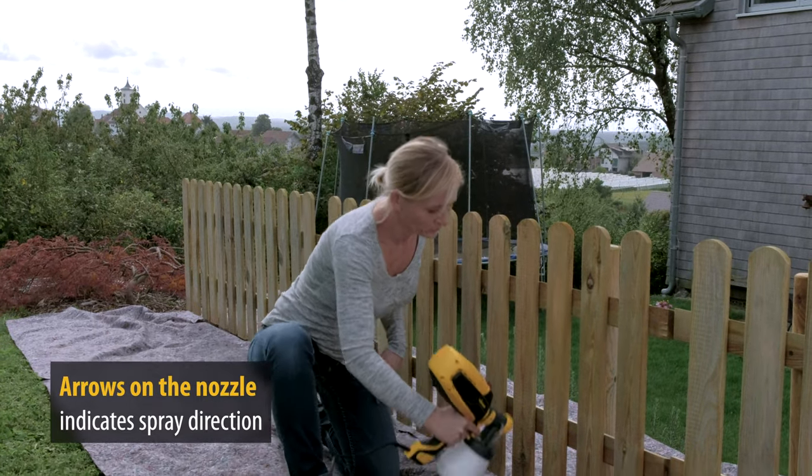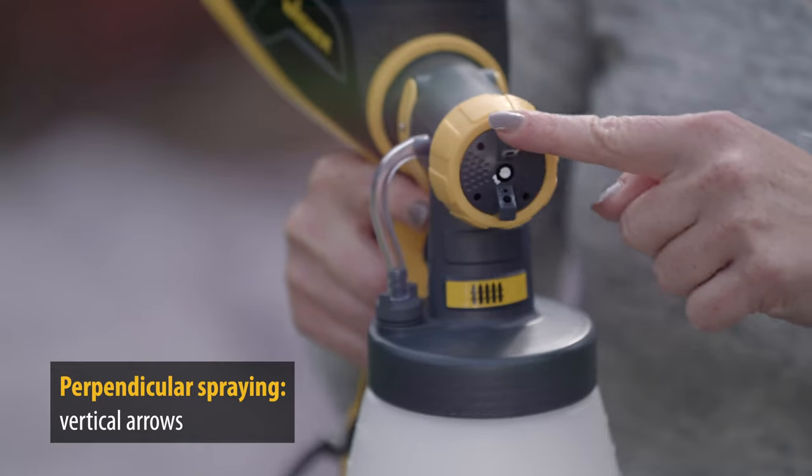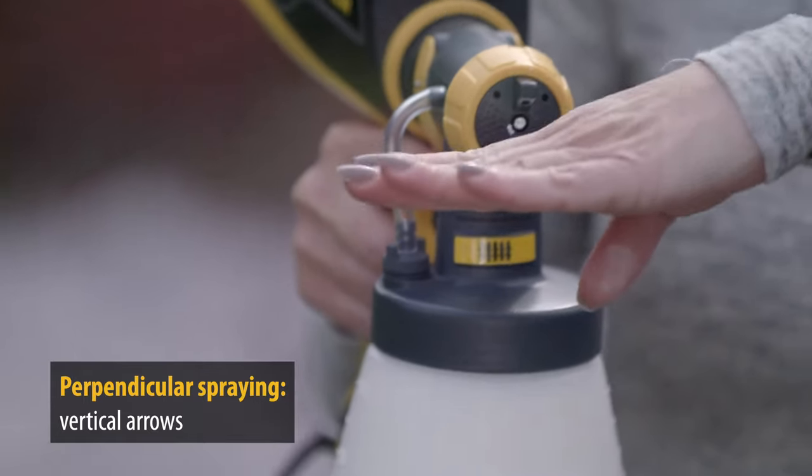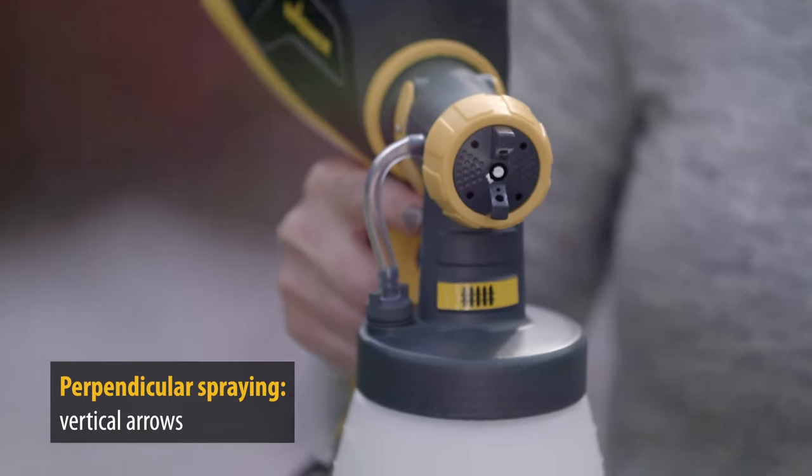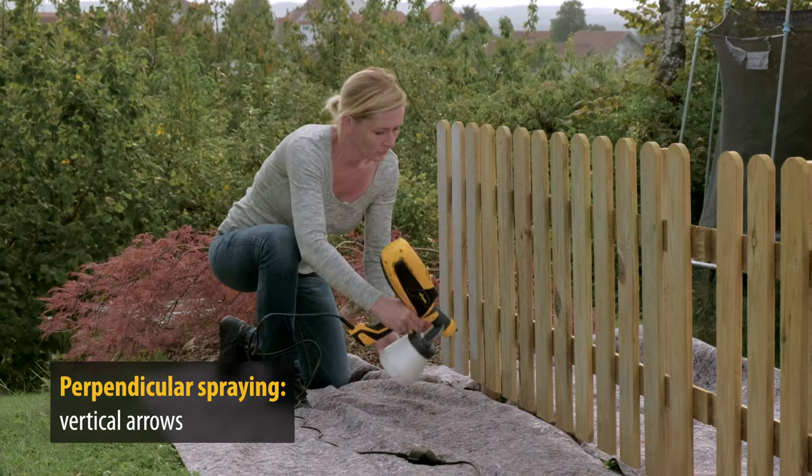The spray attachment has a three-way adjustable paint jet. The arrows always indicate the spray direction. For vertical slats, the nozzle is adjusted so that the arrows are vertical.